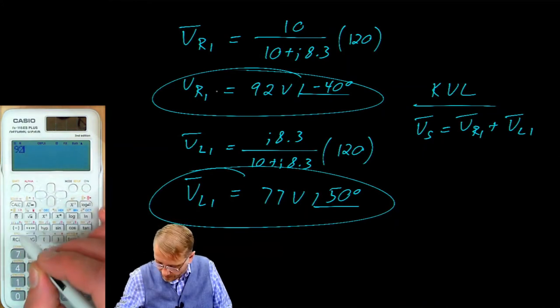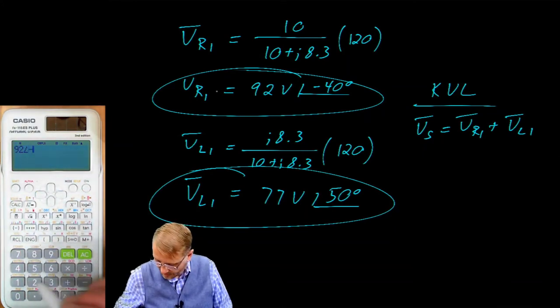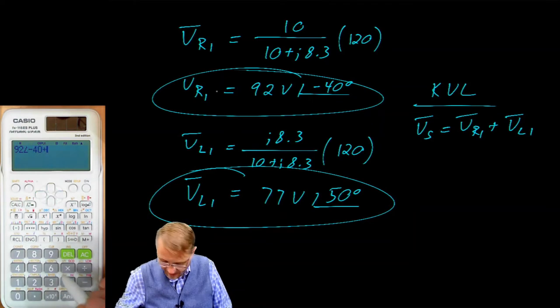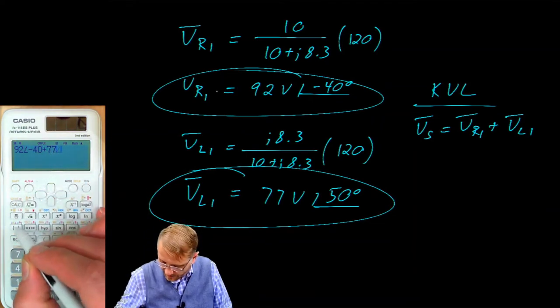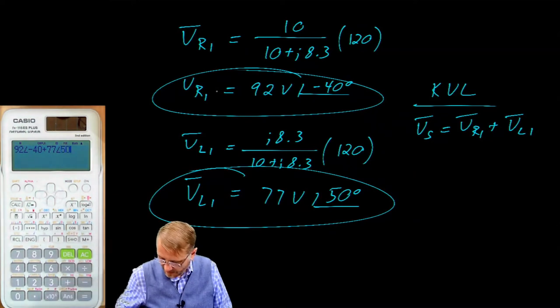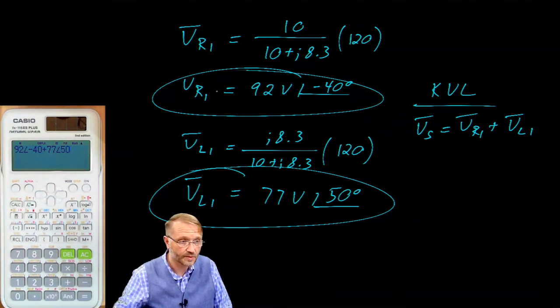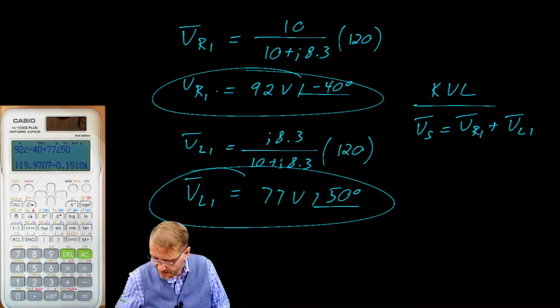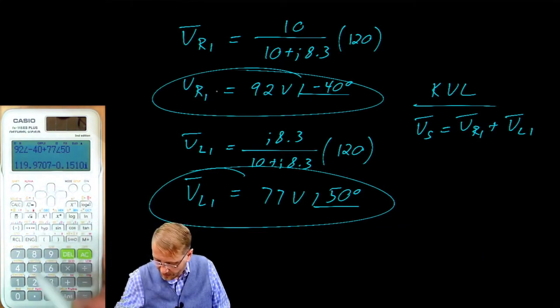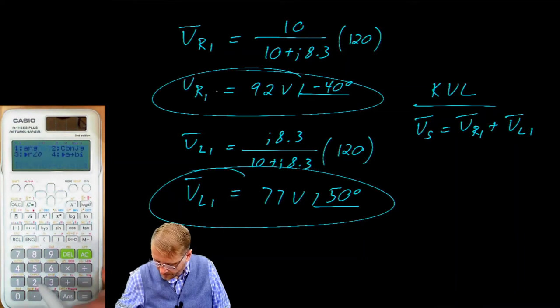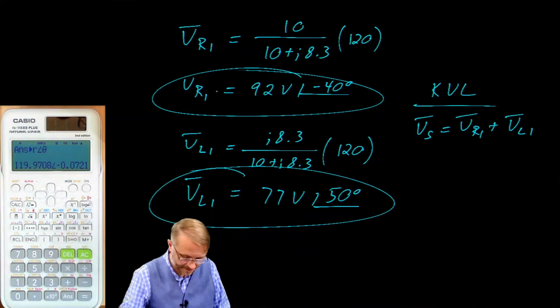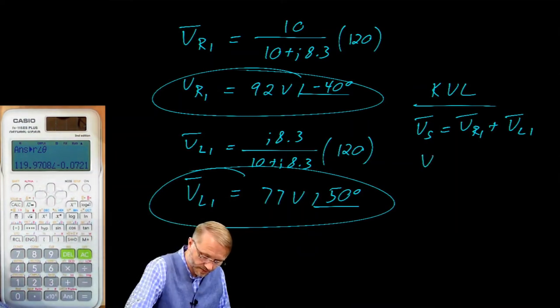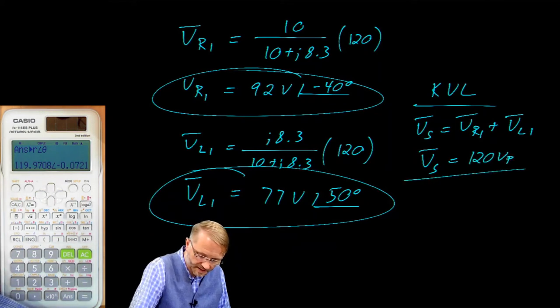Now isn't that interesting? Because there was something that told us that the summation of the voltages, the source voltage better be equal to the voltage on the resistor and the voltage on the inductor. Let's see if that's true. So we have 92 at a phase angle of negative 40 plus 77 at a phase angle of 50. And if we've done this right, this will be very close to 120 volts at angle 0. And it is, we'll put it into polar mode again, very close to 120 volts. So volt source is indeed 120 volts. That's RMS.